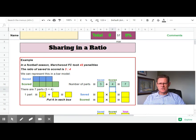Now we're going to split 42 into those seven parts, and that means that six goes in every box. So we fill in six into the saved and scored section for every box.